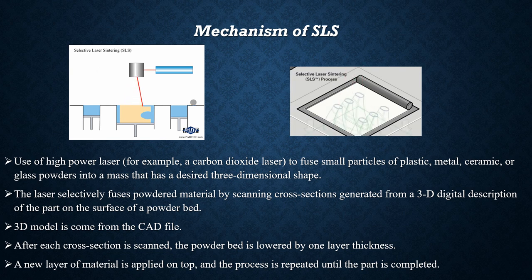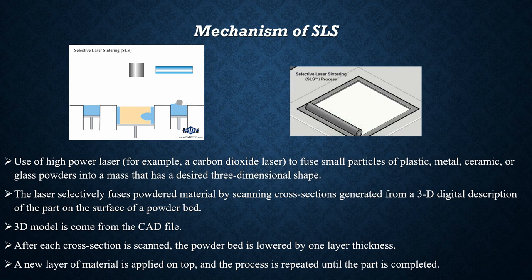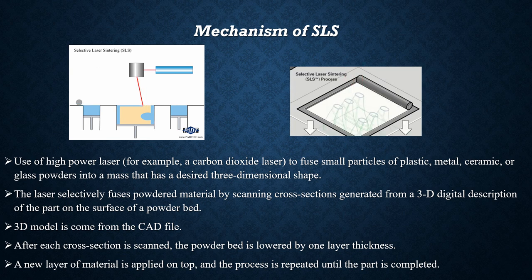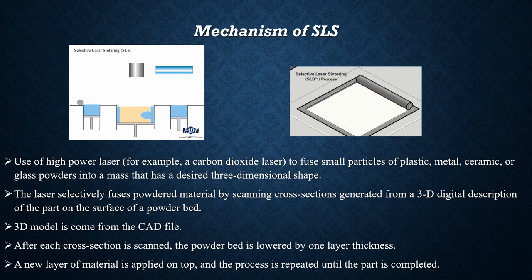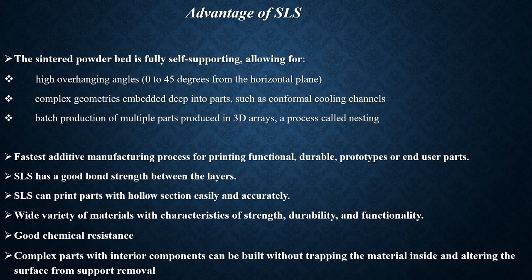The 3D model comes from the CAD file. After its cross-section is scanned, the powder bed is lowered by one layer thickness. Then a new layer of material is applied on top, and the process is repeated until the part is complete.